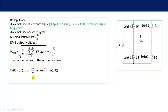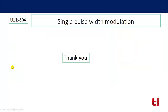This is the basic concept of single pulse width modulation. Other modulation techniques are developed based on this foundation and will be discussed in later classes. To summarize: single pulse width modulation for a single phase full bridge inverter has been discussed, including switching pulse generation, RMS output voltage derivation, reference signal magnitude control, and harmonic elimination by adjusting pulse width. Thank you.